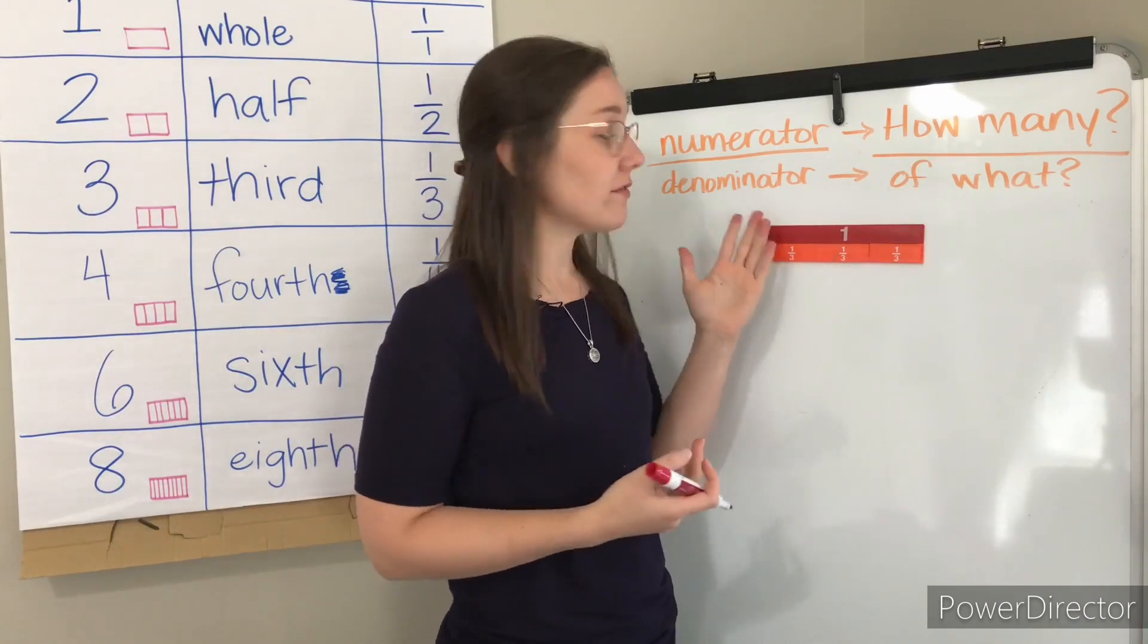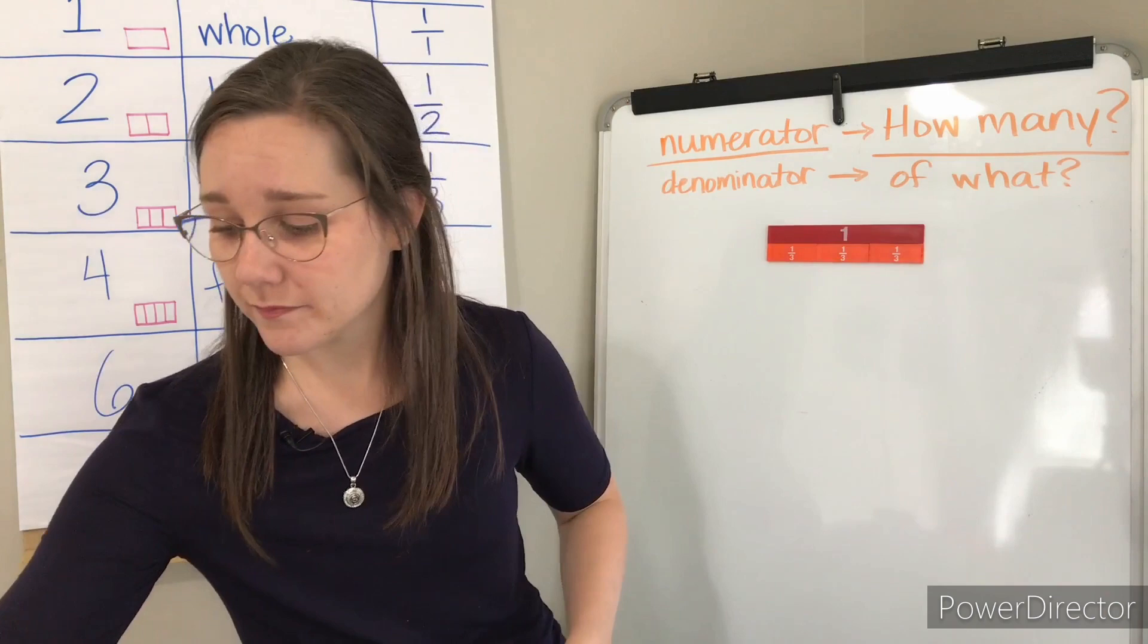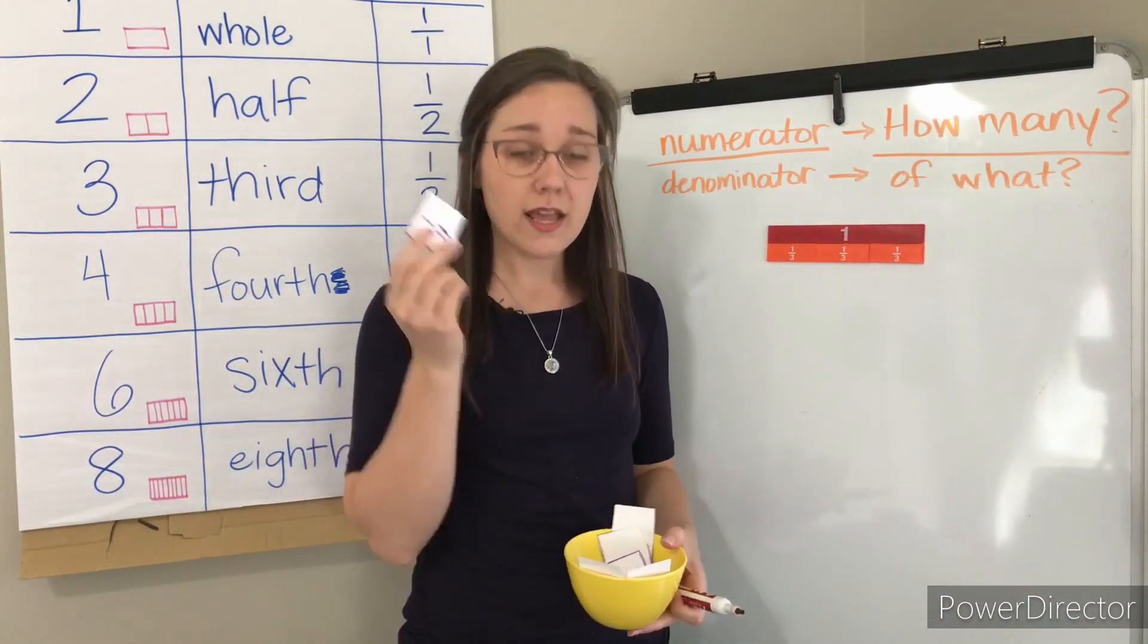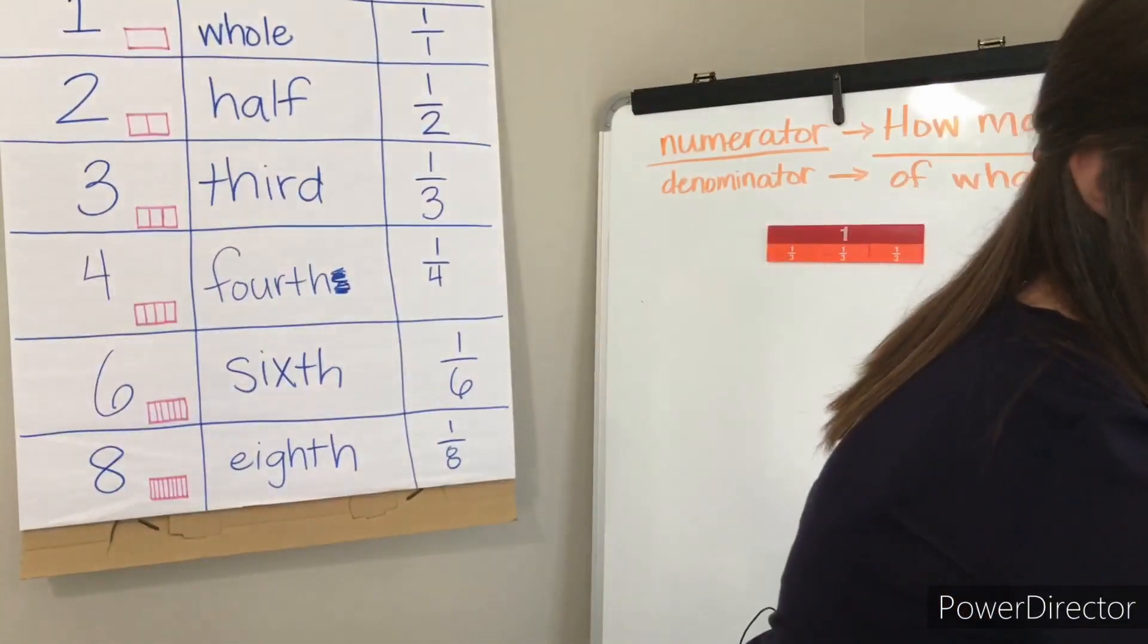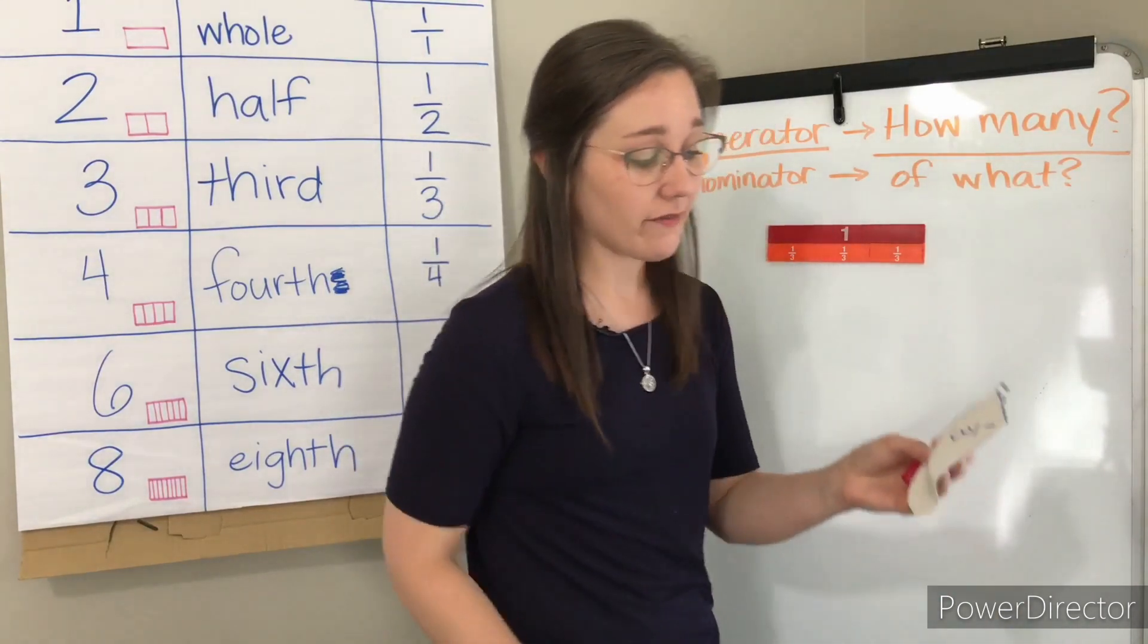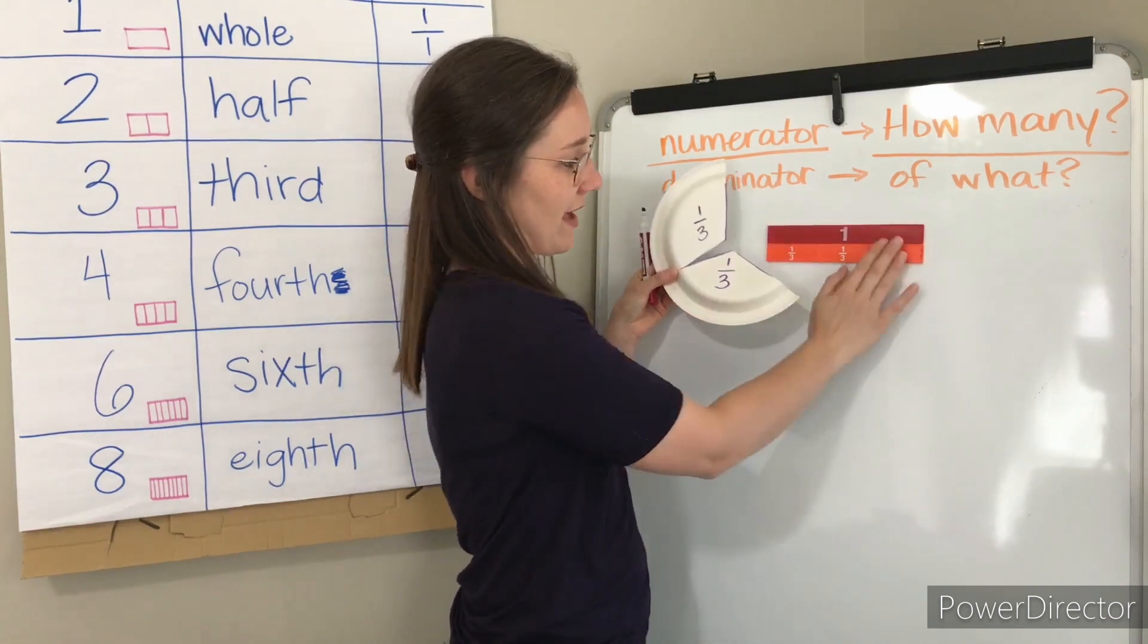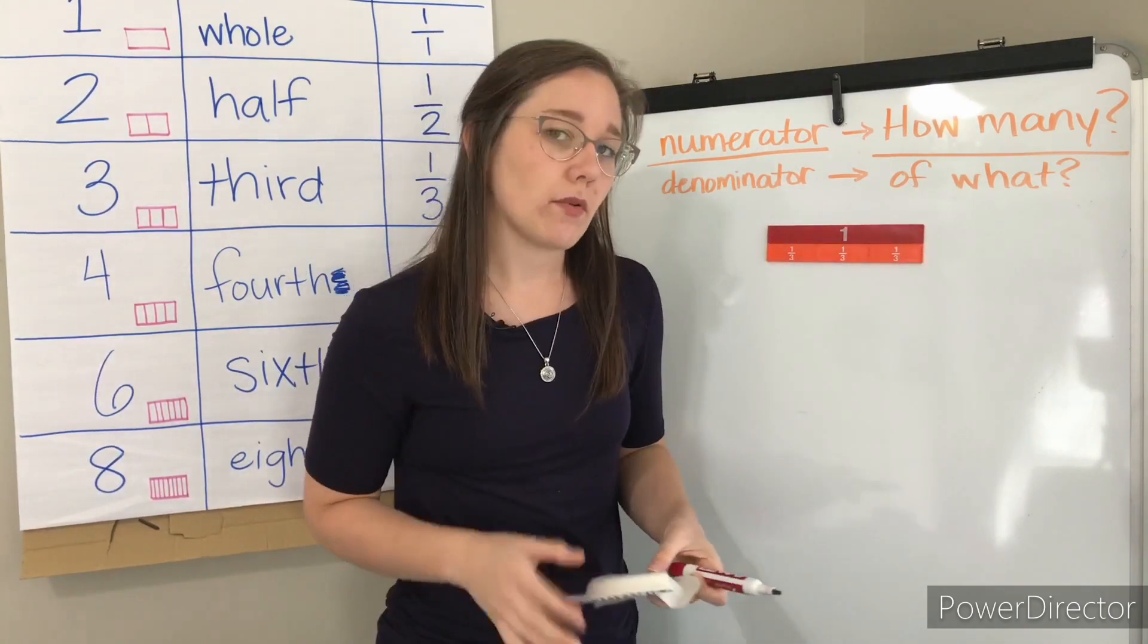Today, what I really want you to focus on in our learning target for today is: I can use fraction manipulatives to find equivalent fractions. Wow, what a mouthful. All that means is we are going to be using objects that we can touch to help us figure out if fractions are equal to each other, if they are the same value. So right here, these fraction bars, these are fraction manipulatives. Now, like we talked about the other day, you may not have these fraction bars at your house, and that's okay. What you should have are these fraction bars that look like this, and you should have some that are cut up. I really like to use these, and the other thing I really like to use are my fraction circles that I made that I cut out of a paper plate.